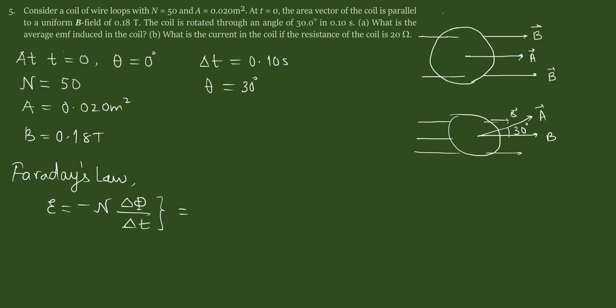So n is the number. Phi, we define phi as the product of B, A, and cosine of angle between B and A.